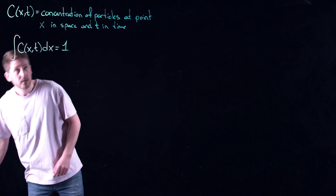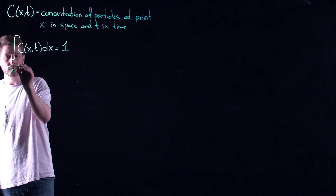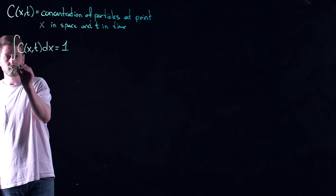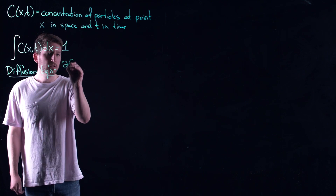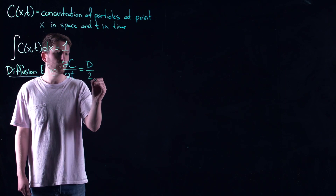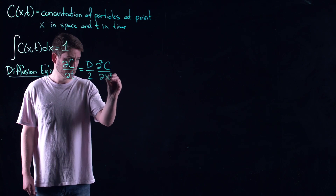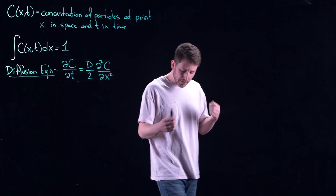It turns out that c satisfies a very particular equation called the diffusion equation, which is a partial differential equation — a more complicated version of the differential equations we've already seen. It involves partial derivatives. You could derive this equation using Fick's law, but I'd like to look at what this means from a modeling perspective.